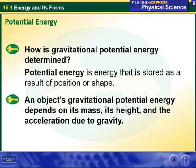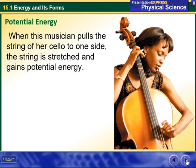Hello my dear students, and welcome to this week's overview. During this week we'll be talking about potential energy. How is gravitational potential energy determined? Technically, potential energy is energy that is stored as a result of position or shape. An object's gravitational potential energy depends on its mass, its height, and the acceleration due to gravity.